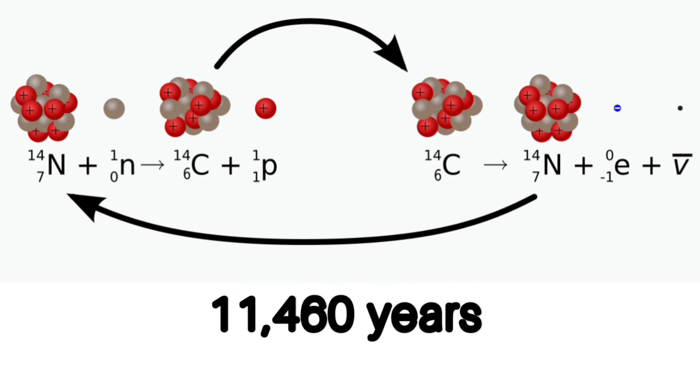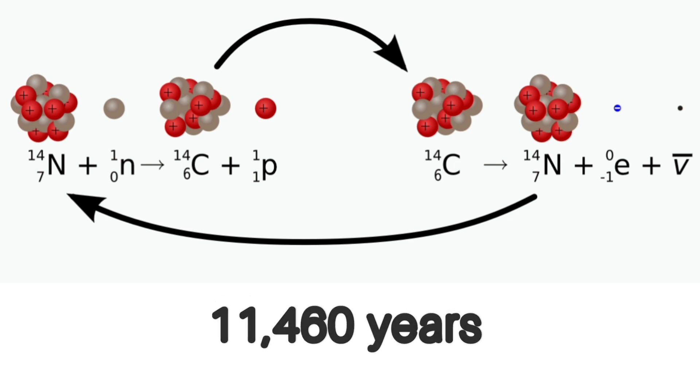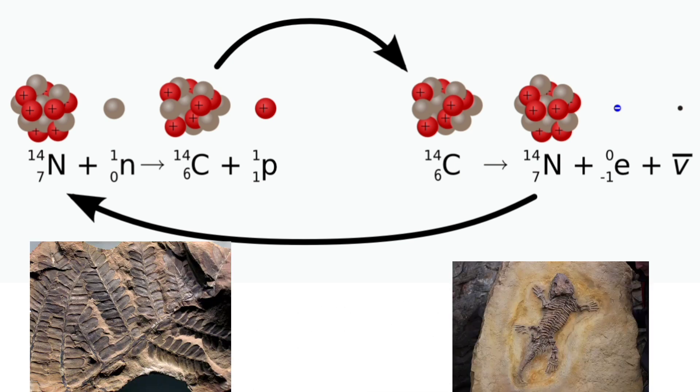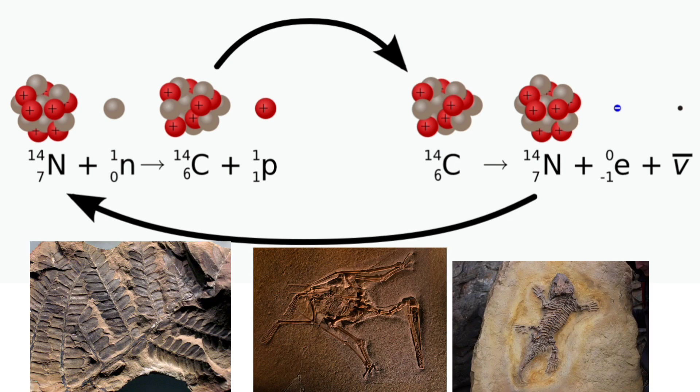The decaying process always occurs over a particular period of time, and this is used to deduce the approximate time when the organism died.